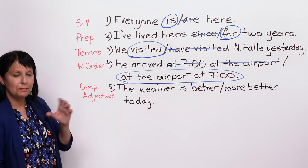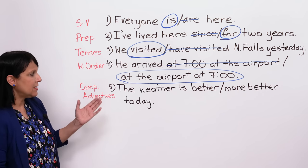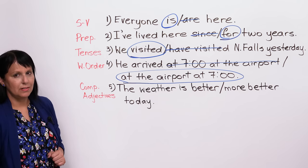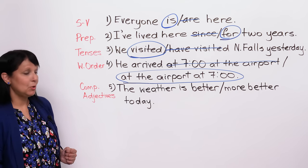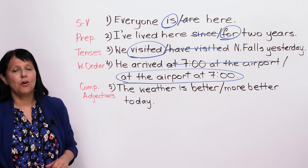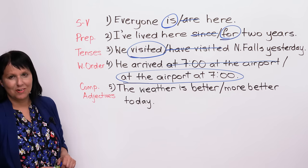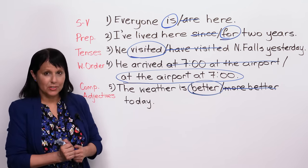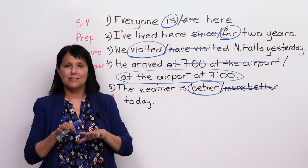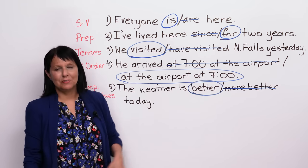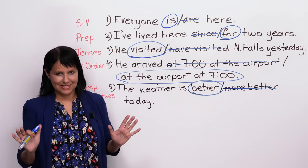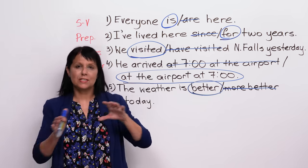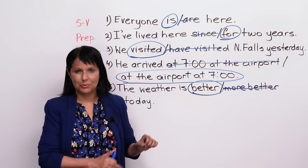Number five is a question of comparative adjectives. 'The weather is better today' or 'The weather is more better today' — which is right? Both are definitely not right — in fact, one of them is always wrong. 'More better' is always wrong. 'Better' is the only correct option. You have good, better, and best — there is nothing else. Some of these you learn by just knowing there is never a case where you use the other form. That's the only option.